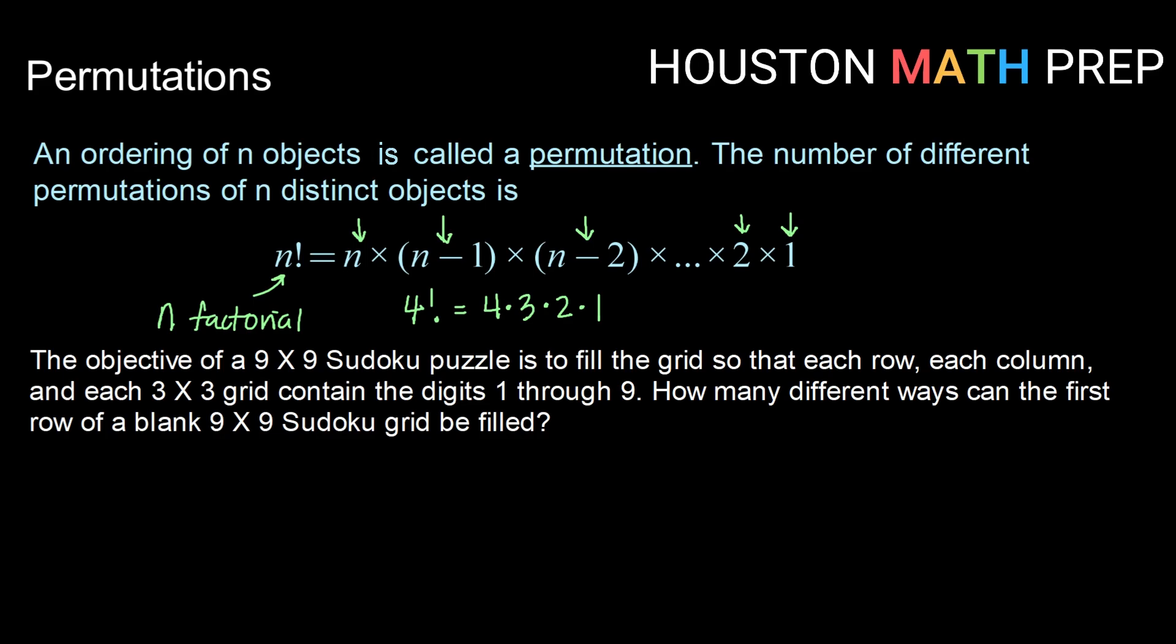The idea there being if I have 4 objects, there are 4 different ways to put the object in the first slot. Once that one is set, there are 3 objects remaining for the second slot, 2 objects remaining in the third slot, and only 1 object remaining in the final slot.